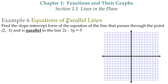Example number 6: equations of parallel lines. Find the slope-intercept form of the equation of the line that passes through the point (2, -1) and is parallel to the line 2x - 3y = 5. So we need to find an equation that's in slope-intercept form that contains this point and is parallel to this line.